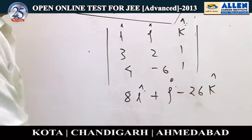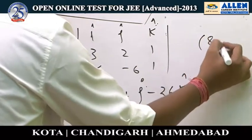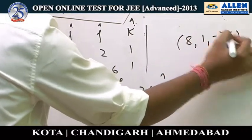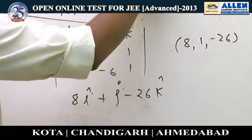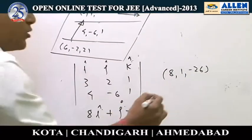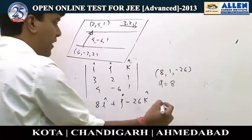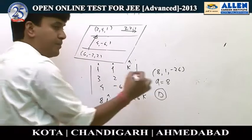So the normal vector to the plane is (8, 1, −26). Comparing with the given form (a, 1, −26), the value of a is 8, and hence the correct answer is D.